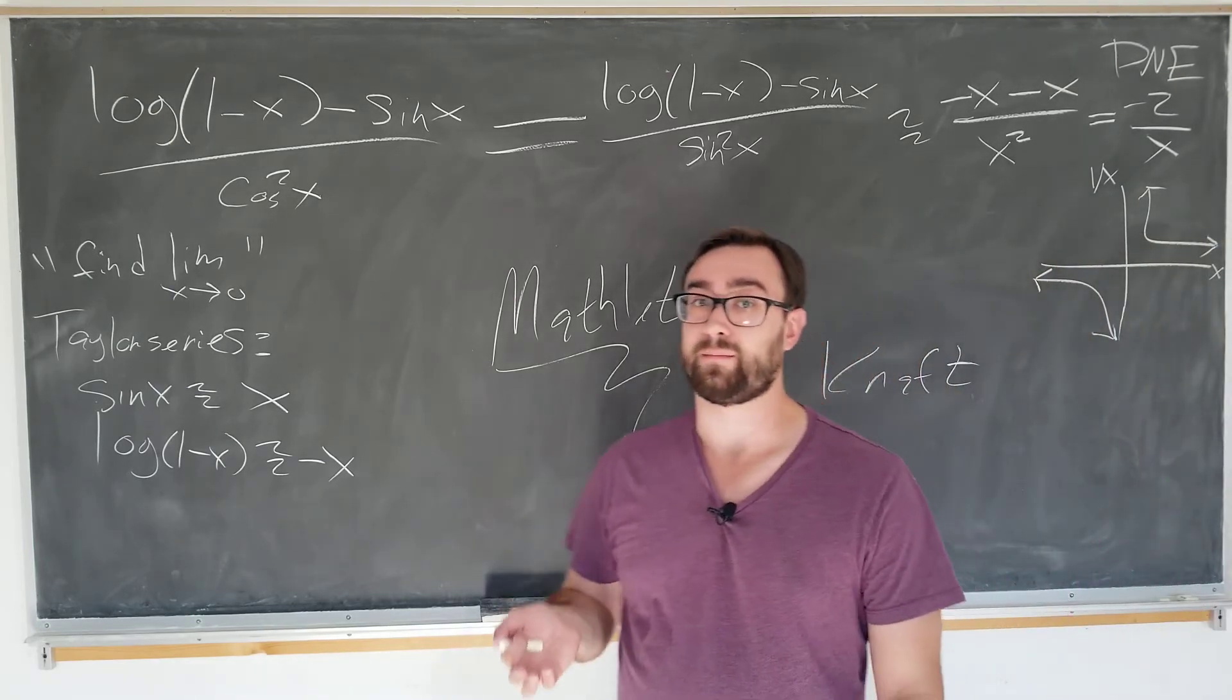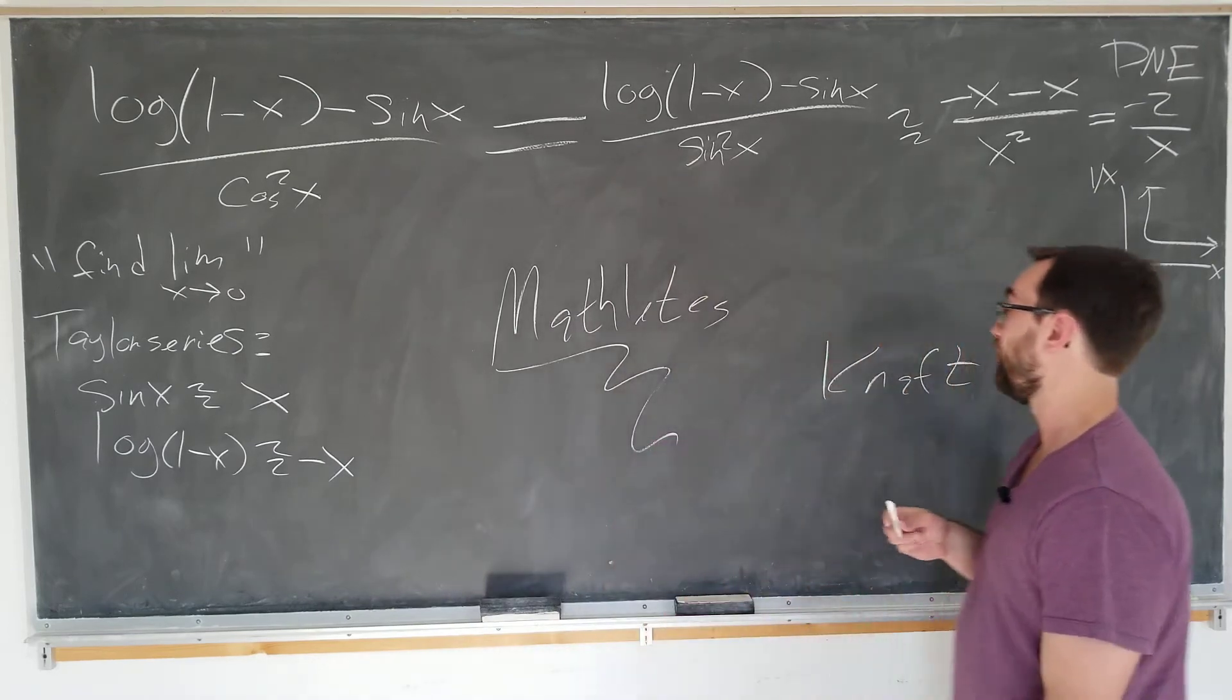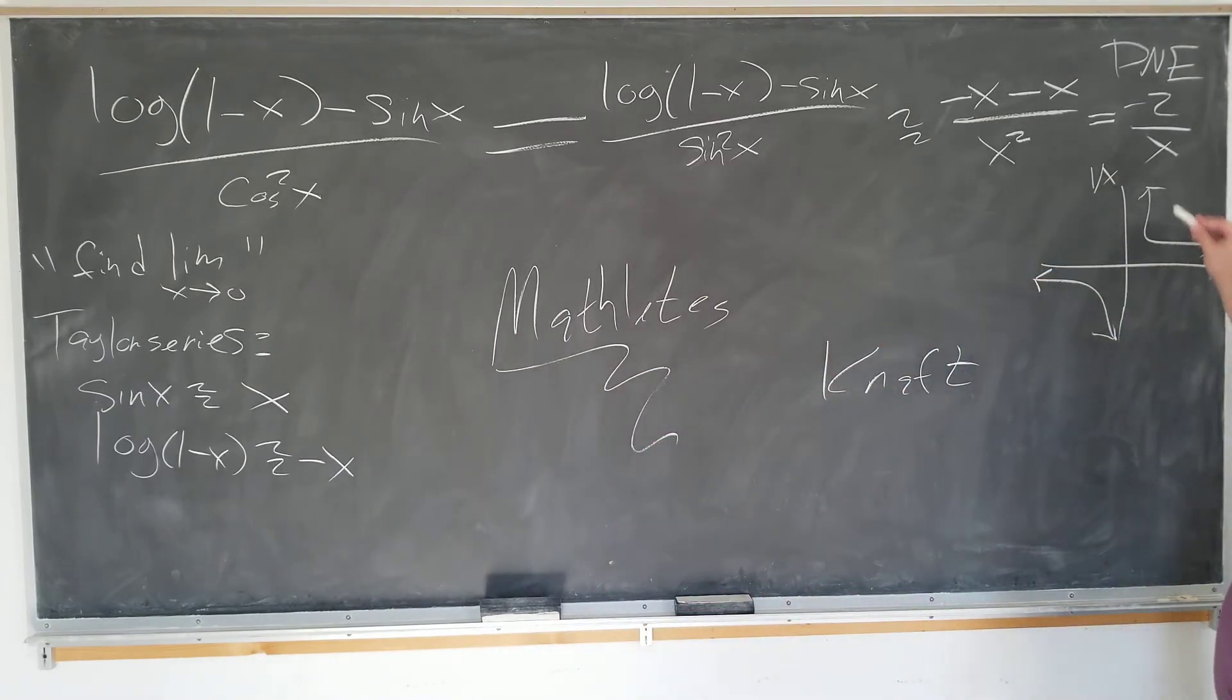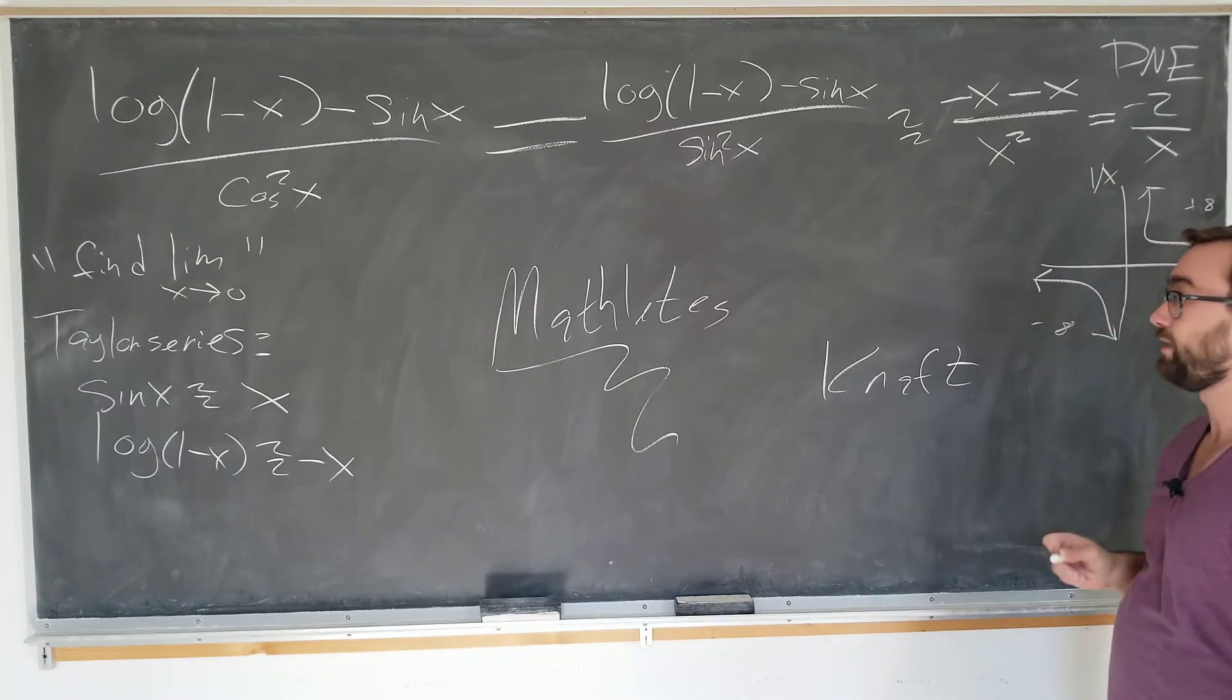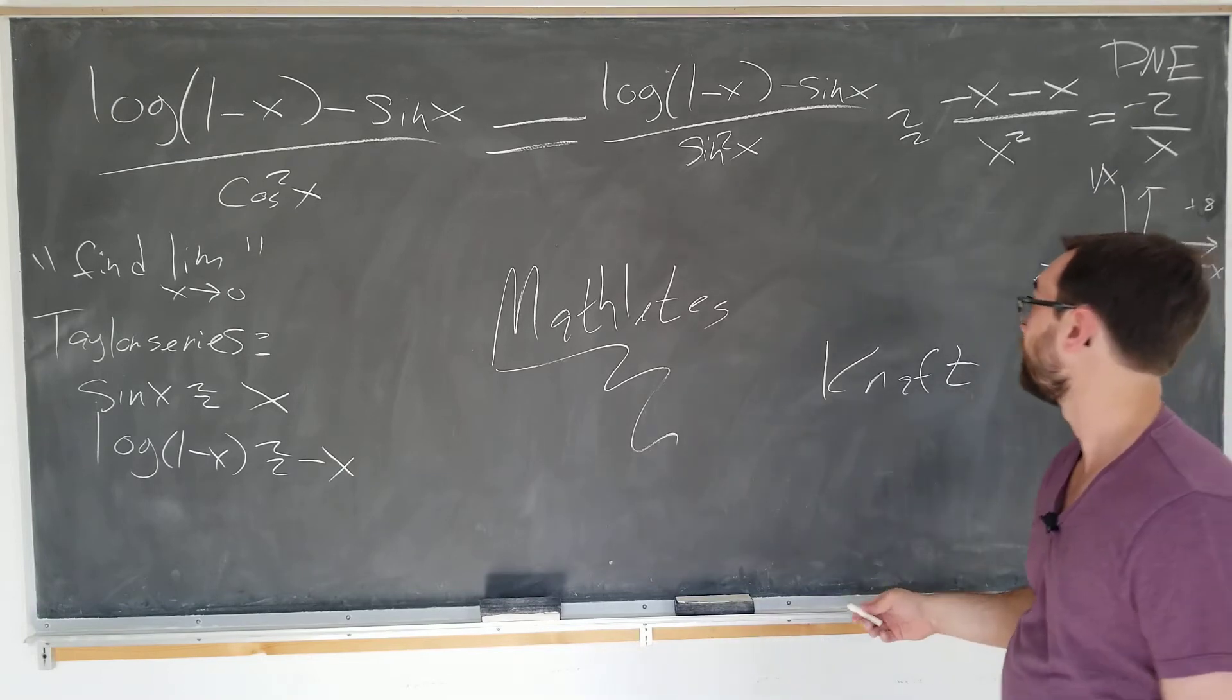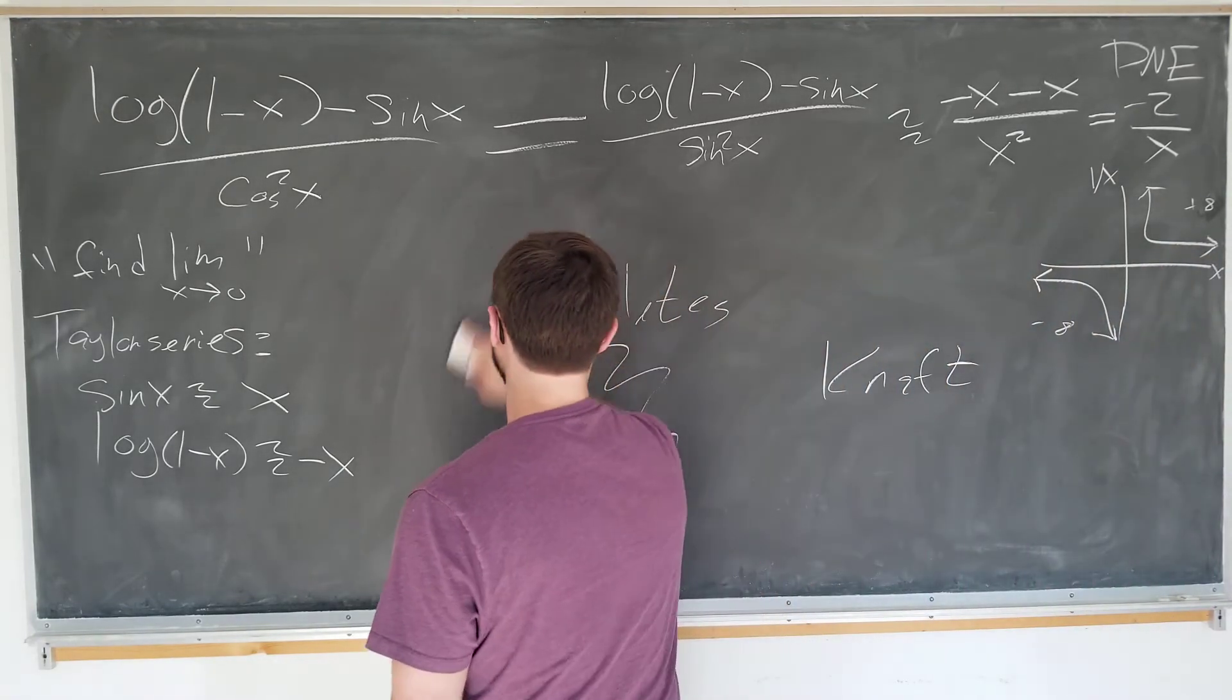...does not equal the left limit, which is minus infinity. And that's why the limit doesn't exist. Okay, so now the question is: how did Kraft get minus 1? We have to figure out how she did this.